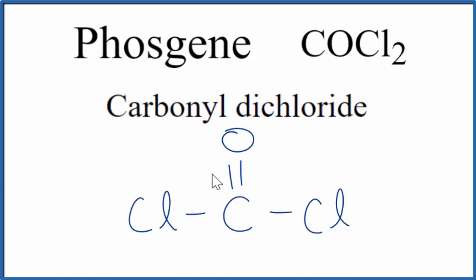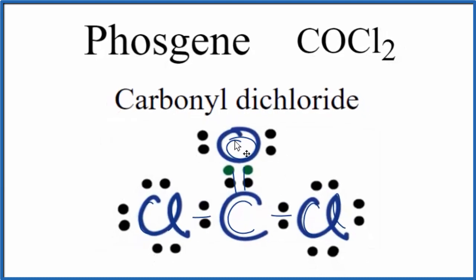If you wanted to overlay a Lewis structure here, that would look like this. So now you can see those lone pairs there on the oxygen and the chlorine for this carbonyl dichloride, also called phosgene, COCl2.